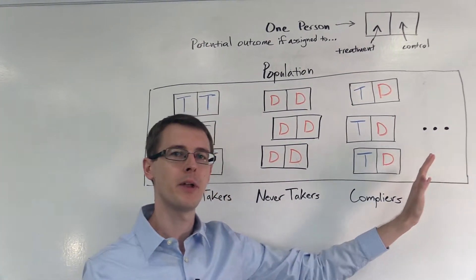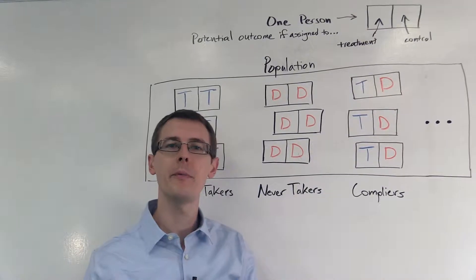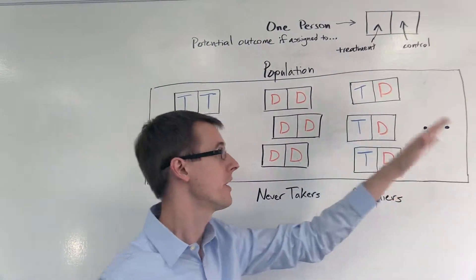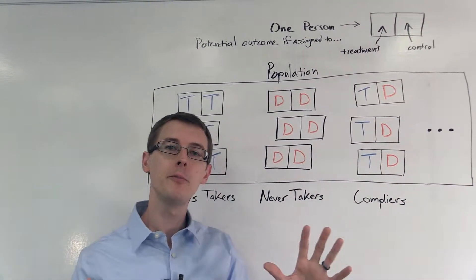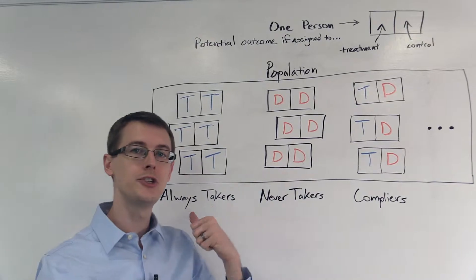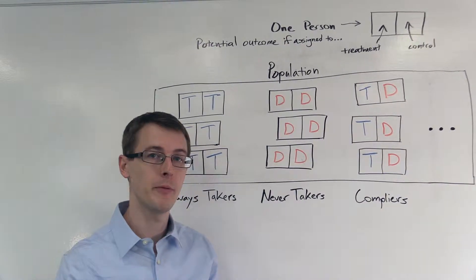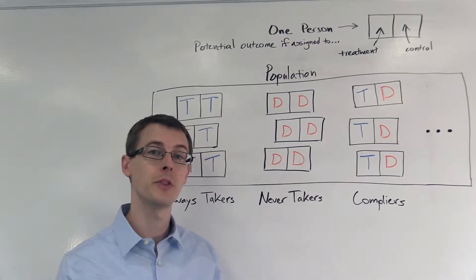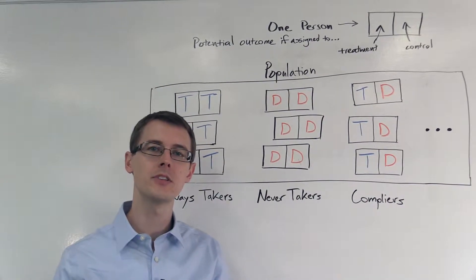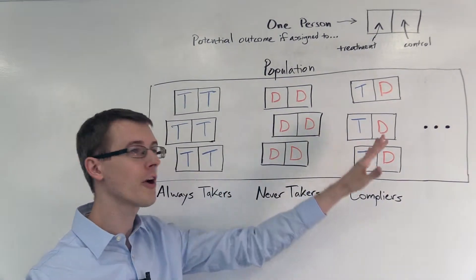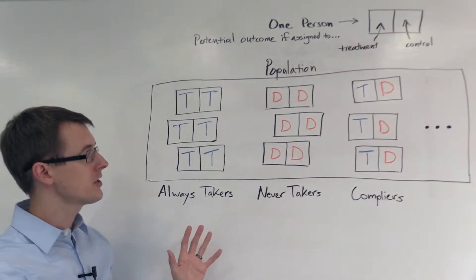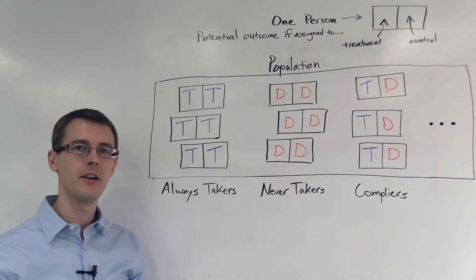In general, there are a lot of people in this population — for example, the entire population of the US has many, many people. I've only shown a few here, but generally we have a lot more, one box for every person. You may remember there was a fourth category: a defier — someone who doesn't take the treatment when assigned to the treatment group, but does take it when assigned to the control group. I haven't drawn any of them here because I'm imposing the no-defiers assumption — simply assuming there aren't any defiers in our population. So now that we've described the population, let's see how we can actually compute LATE with data from this.